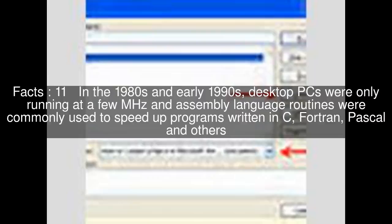In the 1980s and early 1990s, desktop PCs were only running at a few MHz and assembly language routines were commonly used to speed up programs written in C, Fortran, Pascal, and others.